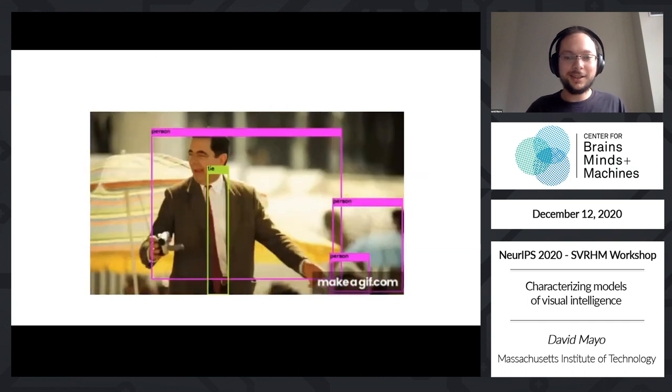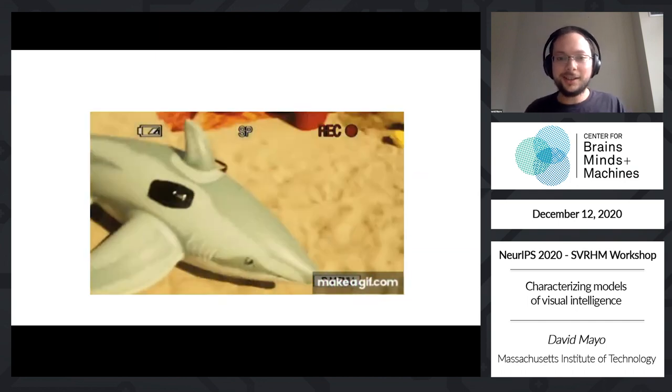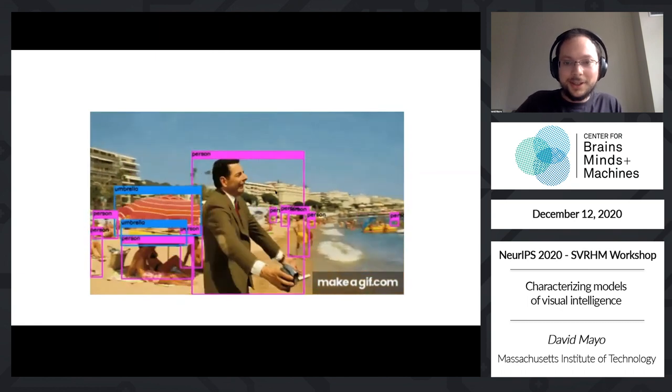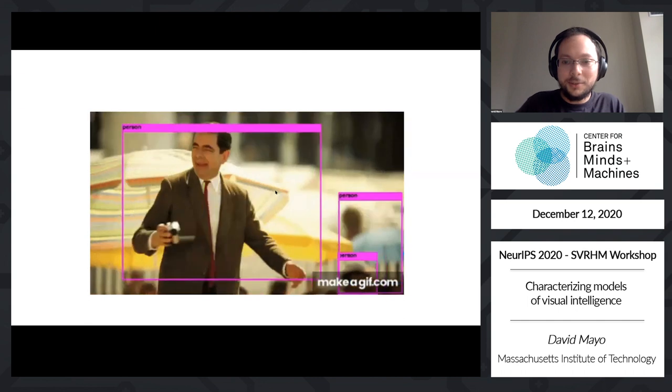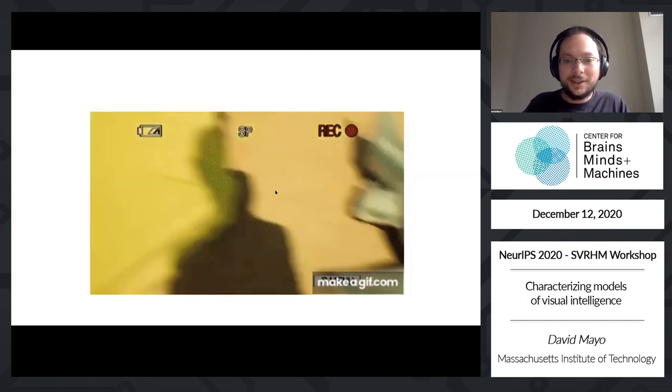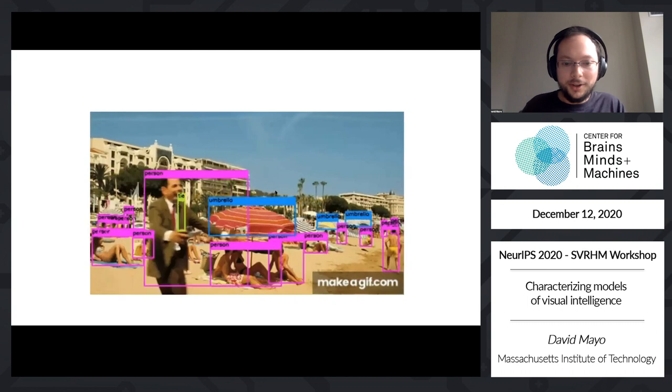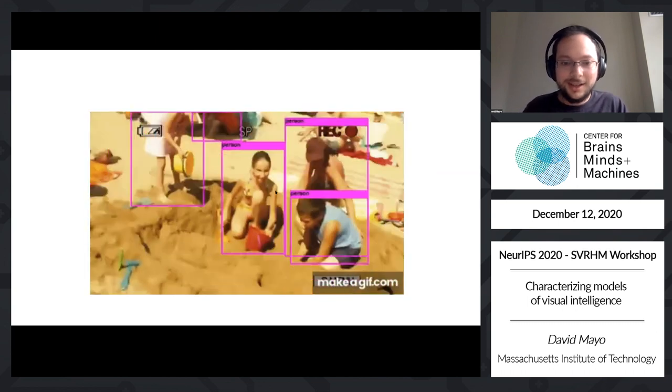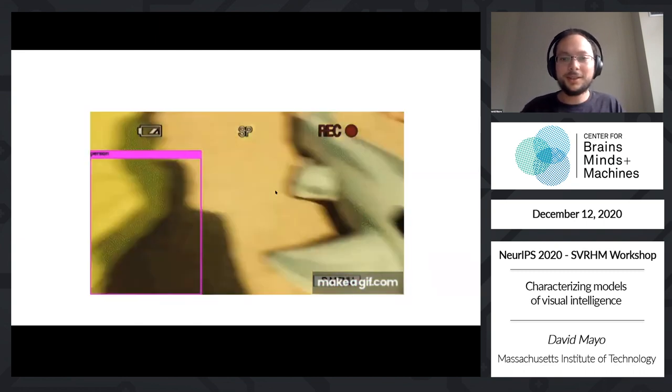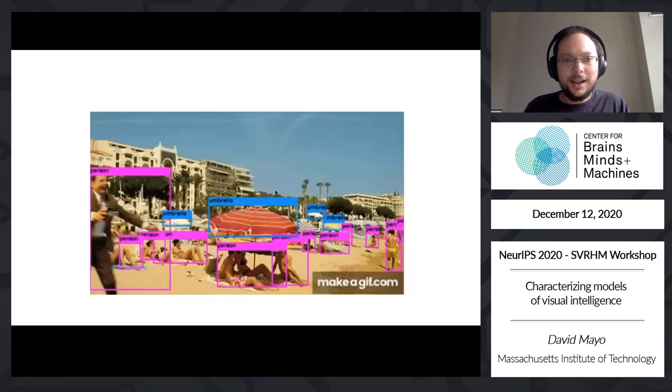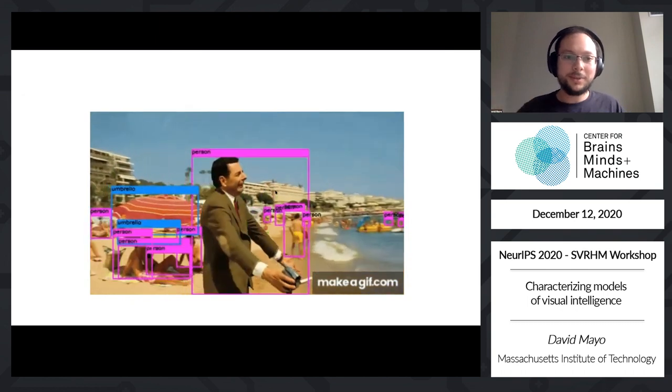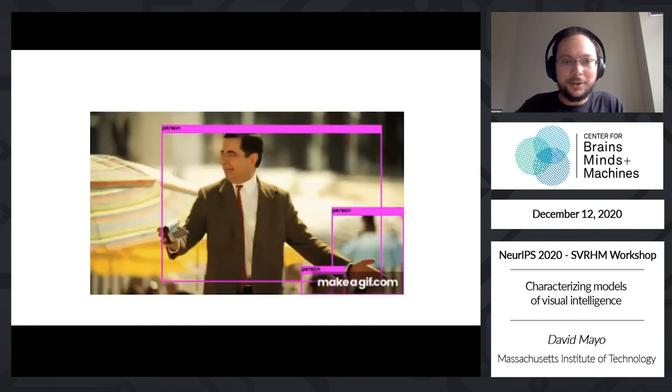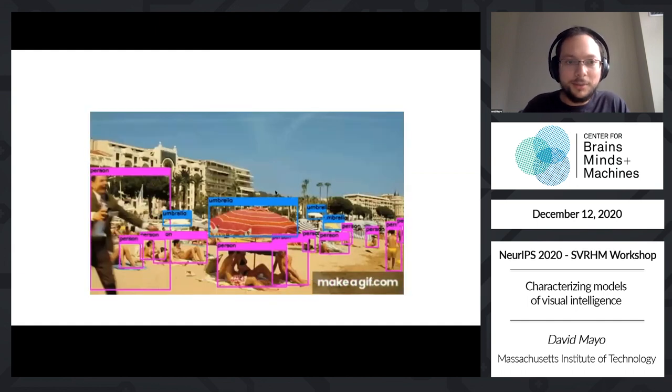When we run these things in the real world, this is an example of running this over Mr. Bean movie, we see that objects will blink in and out of existence. Between frames, we're losing them. There's many objects that are actually not being picked up at all. There's a clear drop-off in performance between what we'd expect from these ImageNet benchmarks and what's actually going on.